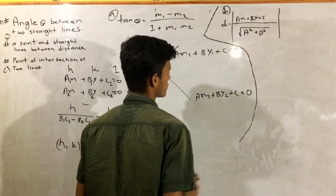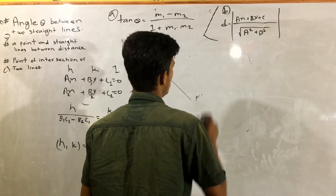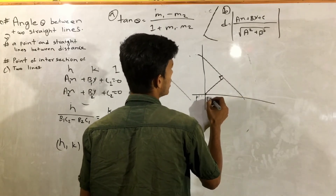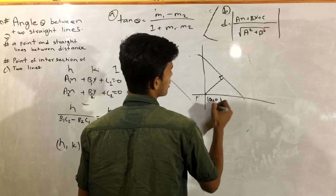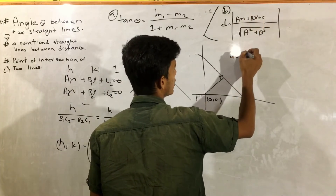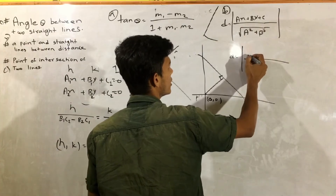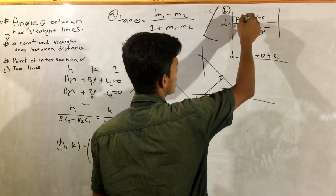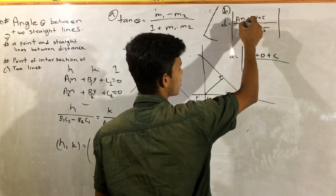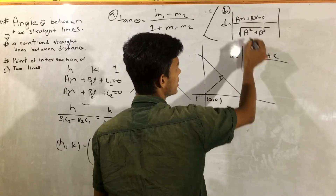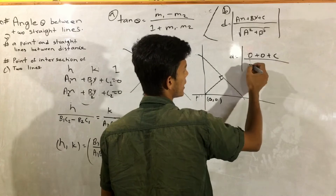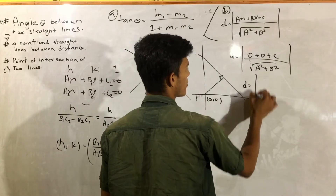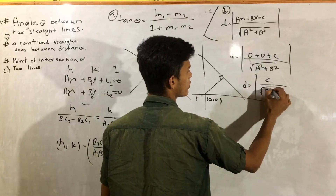And this will be c1a2 minus a1c2 divided by a1 b2 minus a2 b1. And this will be: ax plus by is equal to 0. And this will be: c divided by root under a squared plus b squared.